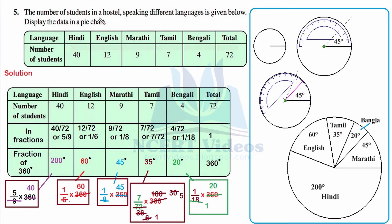Question number five: the number of students in a hostel speaking different languages is given below. Display the data in a pie chart. We have information about students who stay in a hostel and they speak six different languages. We can clearly see that Hindi is spoken by the majority of students and the least spoken is Bengali.